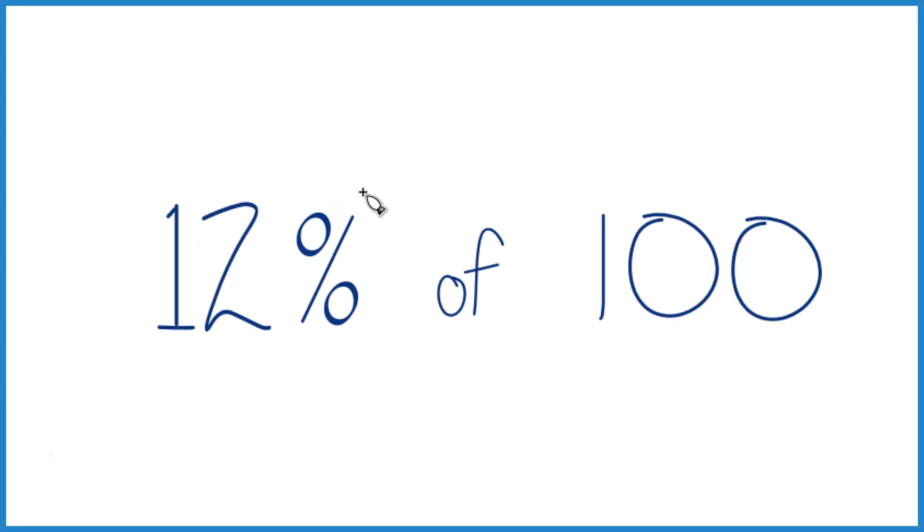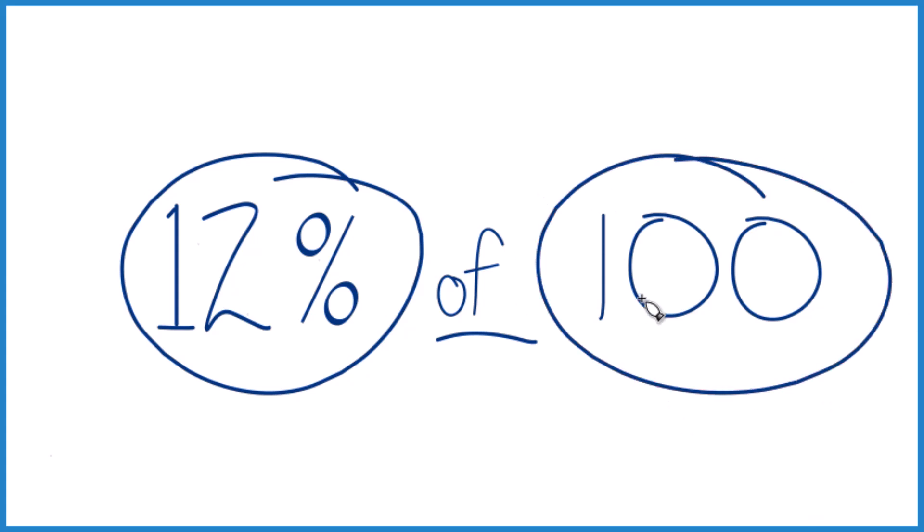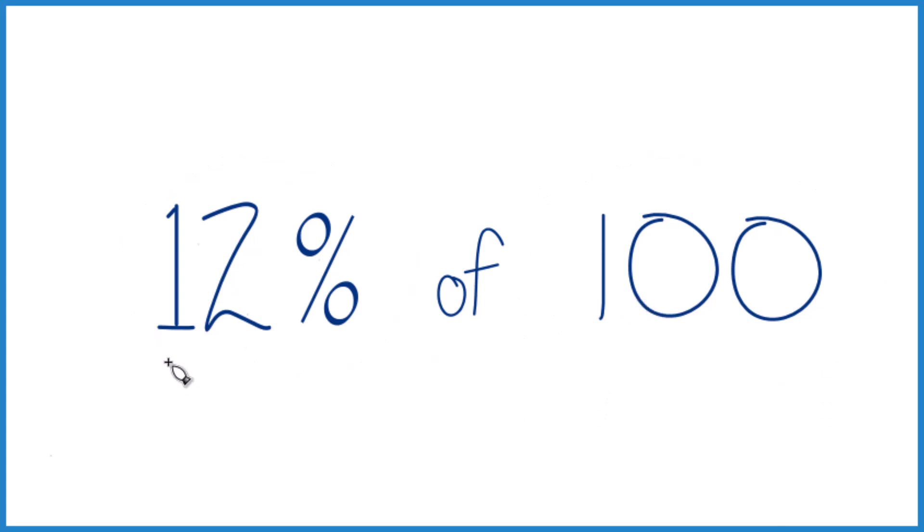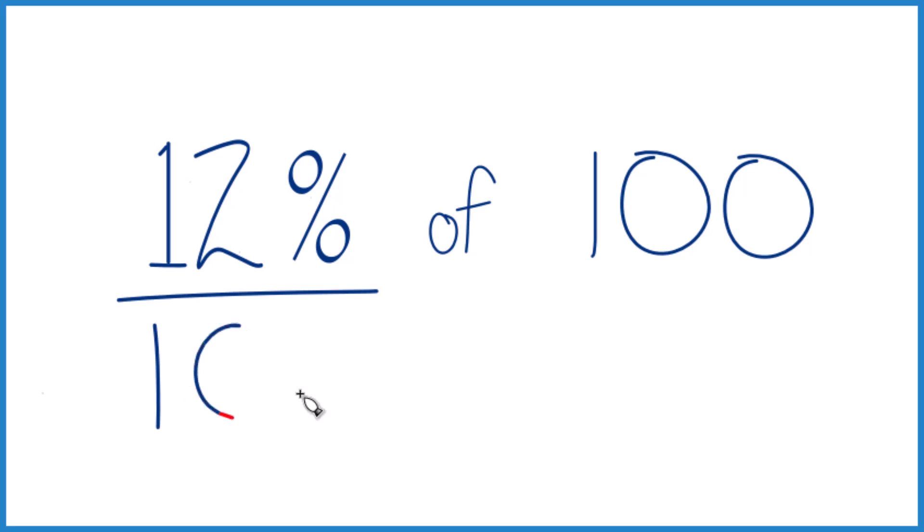This is Dr. B, and we're going to take 12% of 100. So right off, when we think about percent, we're thinking per 100. So 12%, that's 12 per 100. 12% of 100 is just 12. That's one way to think about it.